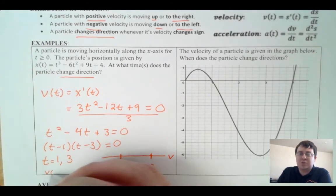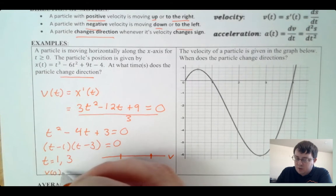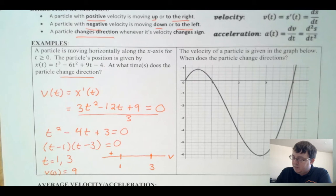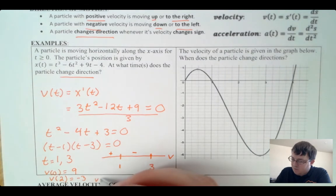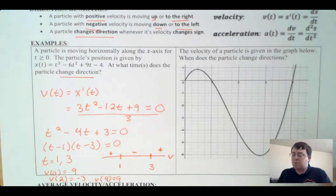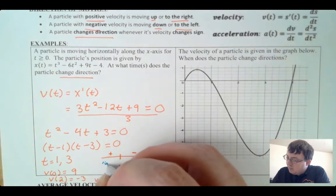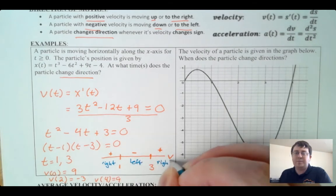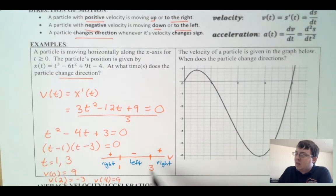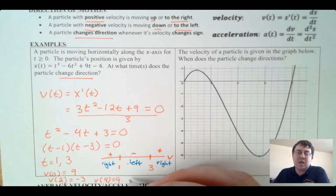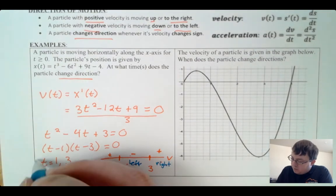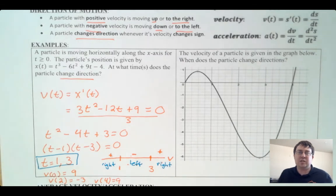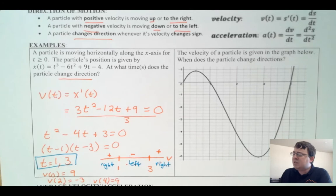Plugging test values into the velocity equation: at t = 0 I get positive 9, so velocity is positive. At t = 2 I get negative 3, so velocity is negative. At t = 4 I get positive 9, so velocity is positive again. This means: to the left of 1 the particle moves right, between 1 and 3 it moves left, and beyond 3 it moves right. Since velocity changes sign at both t = 1 and t = 3, the particle changes direction at both of those times.